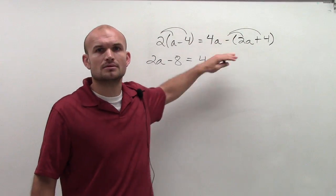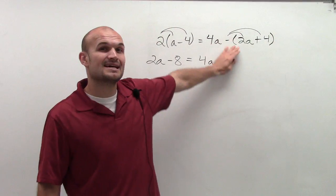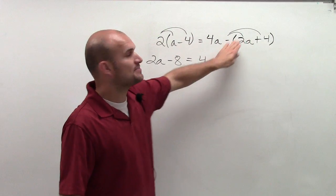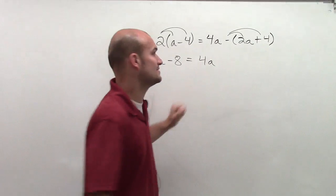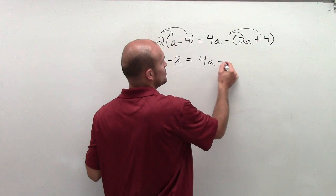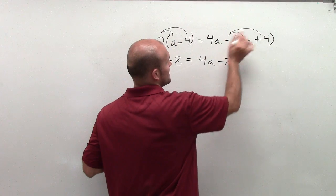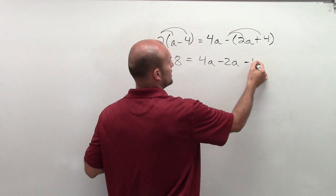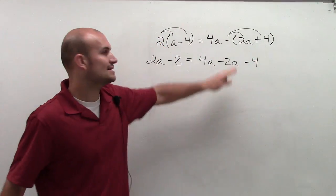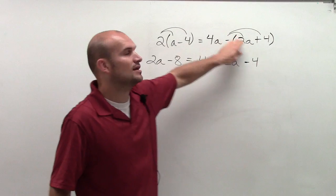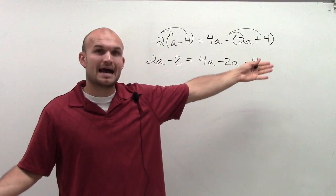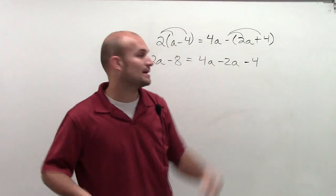Well, remember that negative is actually a negative 1. You're taking the opposite of both of those values. So negative 1 times 2a is negative 2a, and negative 1 times a positive 4 is negative 4. Remember, you're not taking the opposite of 2a; it's the opposite of both of those terms. I'm saying opposite; you could also just say multiplying by negative 1.